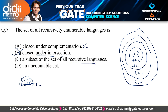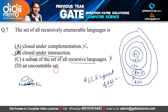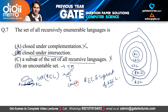Option 3 says recursively enumerable languages are a subset of recursive languages — but this is false, since recursive languages are themselves a subset of recursively enumerable languages, not the other way around. Option 4 says it is an uncountable set — also false, because recursively enumerable languages correspond to Turing machines, and the set of all Turing machines is countably infinite, not uncountable. Therefore the only correct option is option B: closed under intersection.